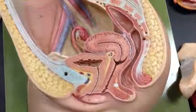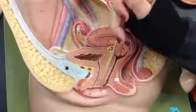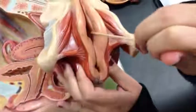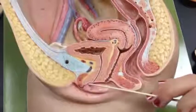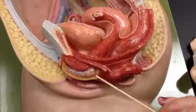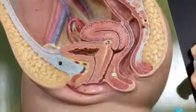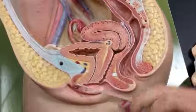The vulva is the external genitalia. The vestibule would be right here around the opening of the vagina — this region. This is the labia minora. This one right here is the greater vestibular gland. Vestibular bulb. Labia majora. Clitoris. And mons pubis.